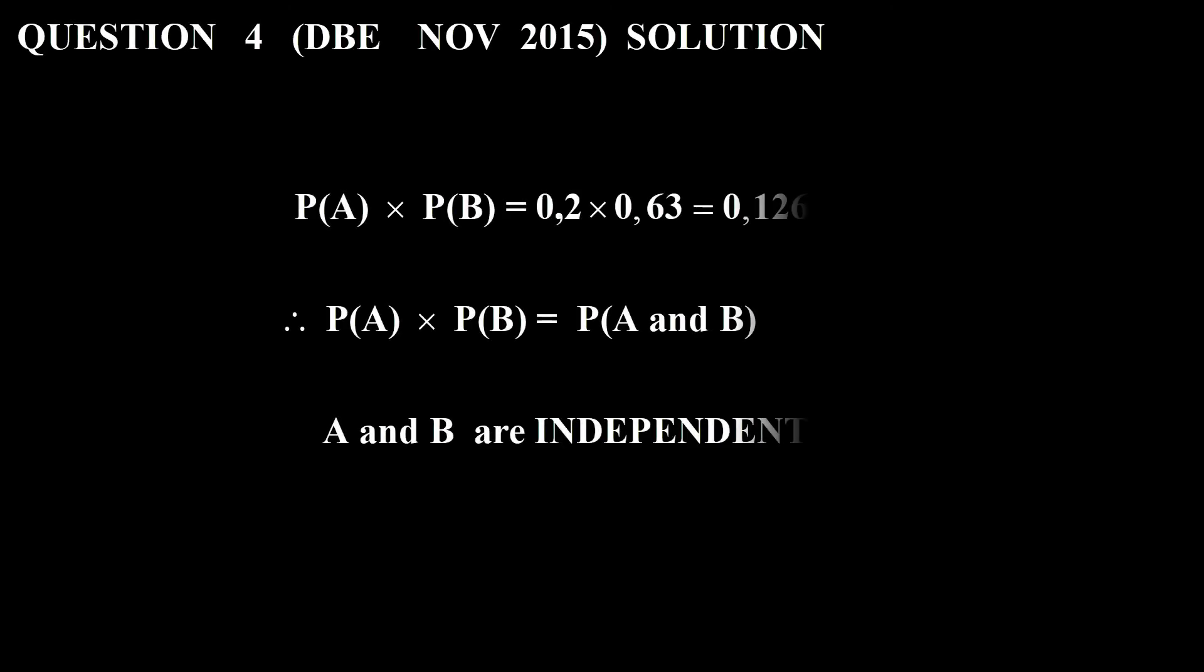Let's look at the solution. Because it's independent, it means the probability of the one times the probability of the other. So we are given the probability of A is 0.2. The probability of B is 0.63. We calculate that. That gives you 0.126. Then we are also given that the probability of A and B is also 0.126. So the two of them are equal. Therefore A and B are independent events.